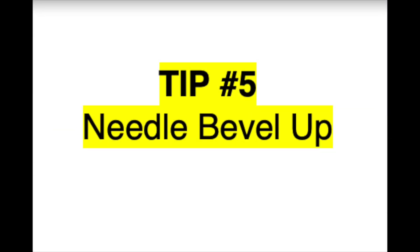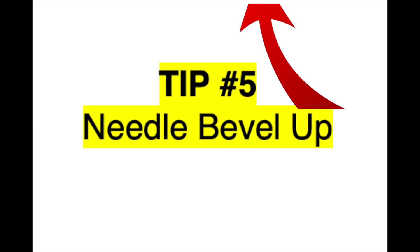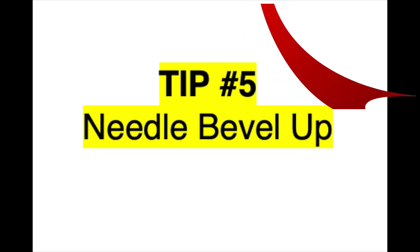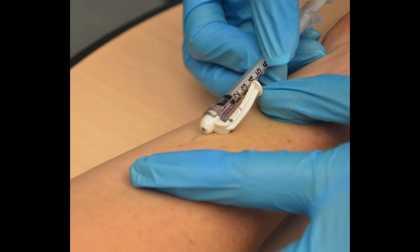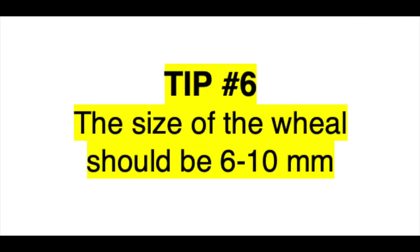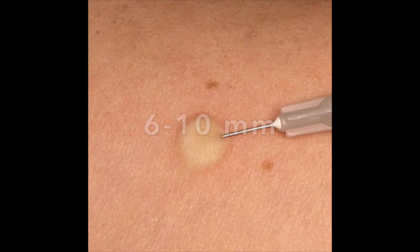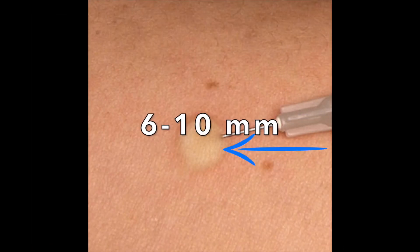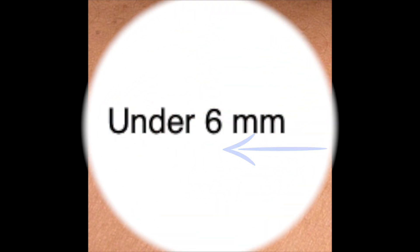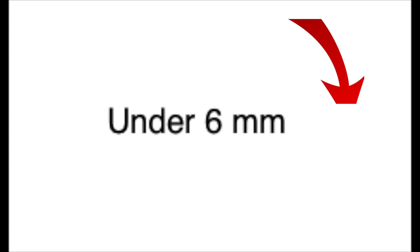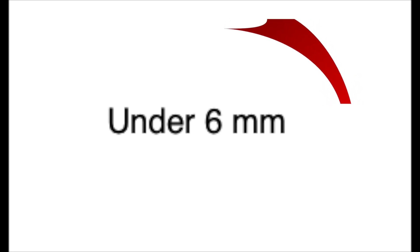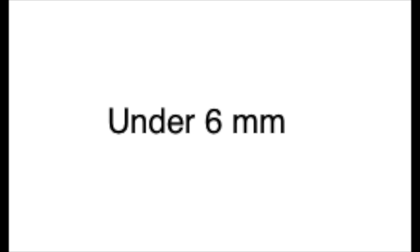Tip number five: needle bevel needs to go up. This is super important because it will also help to facilitate the PPD going into the intradermal space. Tip number six: the size of the wheal should be 6 to 10 millimeters. If you don't see a wheal within that size, the test needs to be re-administered. I do see more individuals who administer this test run below 6 millimeters more often than I see it being given too far past 10 millimeters.